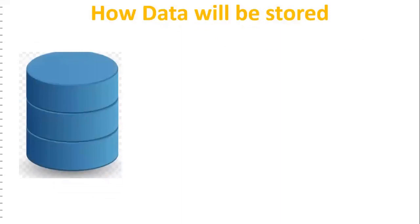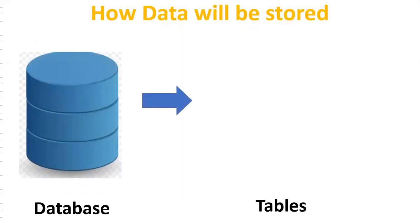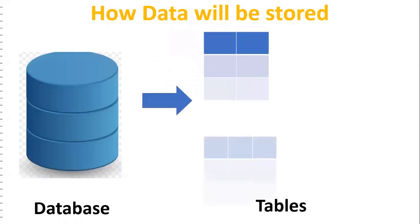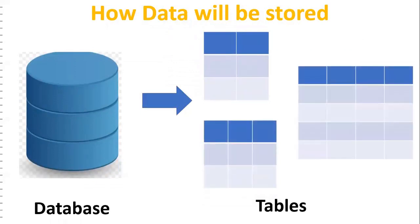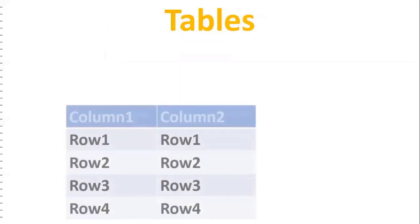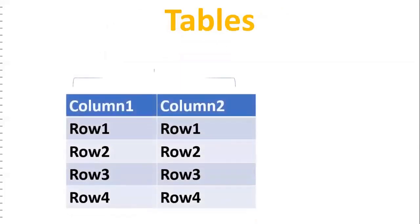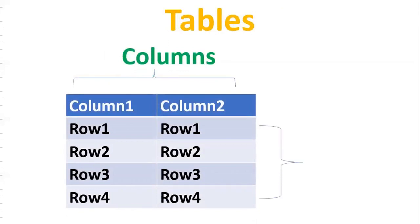How is data stored in the database? Data is stored in the form of tables. In the database, data is stored in tables, which consist of columns and rows. For example, this table has two columns and four rows.